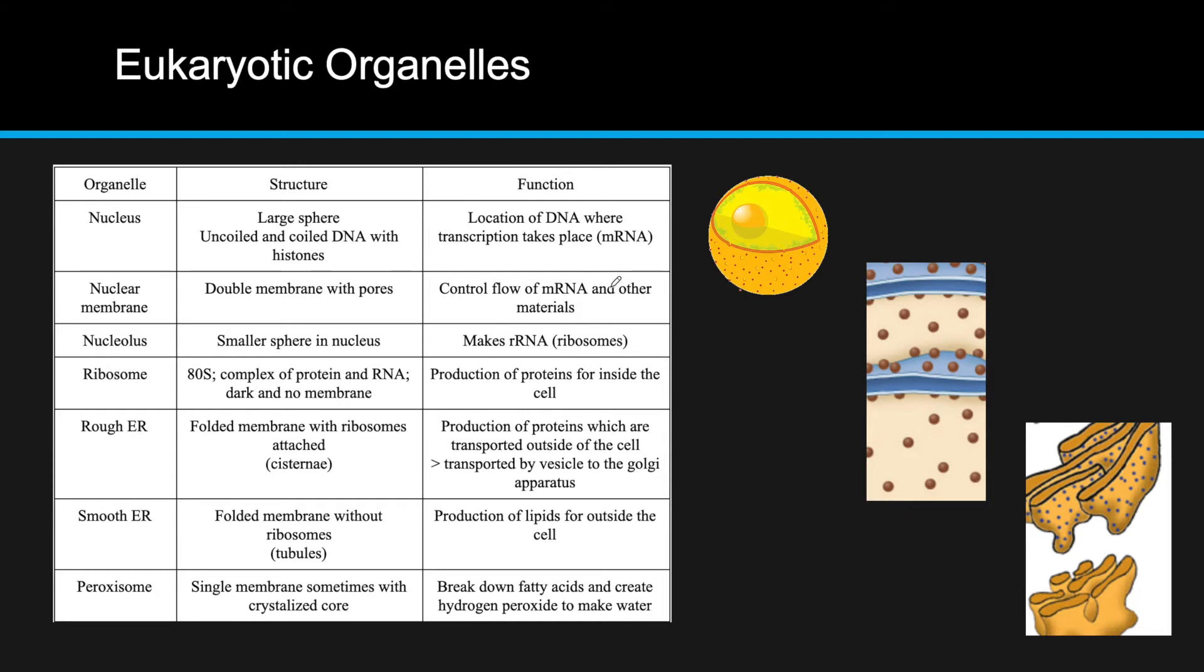So, now getting into the specific organelles. First of all, we have the nucleus, which is just where the DNA is located. It's a large sphere-like organelle. And it has both uncoiled DNA, which is called heterochromatin, and coiled DNA, which is called euchromatin. It has the nucleolus, which makes rRNA, which is ribosomes. And it also has a double membrane with pores, which allows stuff in and out of the cell.